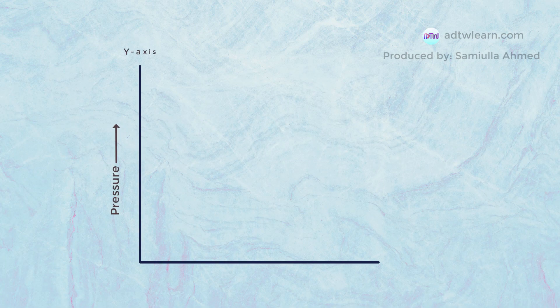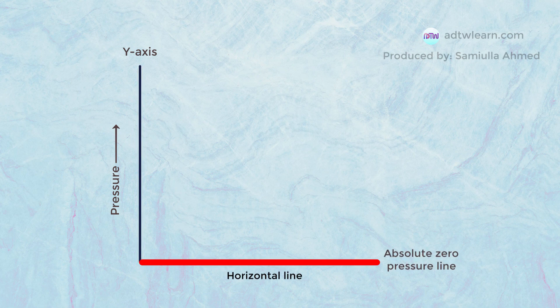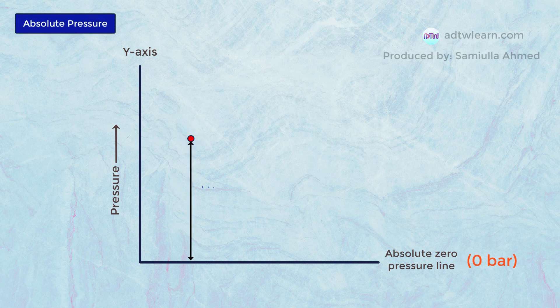This graph will show the pressure on the y-axis. As the y-line goes up, the pressure goes on increasing. This horizontal line represents absolute zero pressure, that is, zero bar, or no pressure at all. From this zero pressure line, if any pressure is measured, that pressure is called absolute pressure.